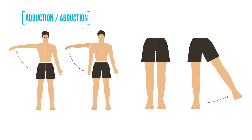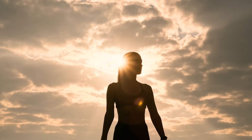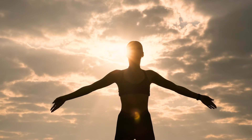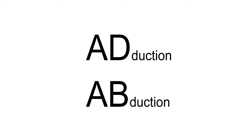Abduction and adduction are relatively easy concepts to remember. If you think about bringing the upper or lower limbs towards the body, you're adding it to the body by bringing it closer — that's called adduction. Moving it away from the body is called abduction. Most people simply capitalize AD in adduction and AB in abduction, or say ADduction and ABduction.